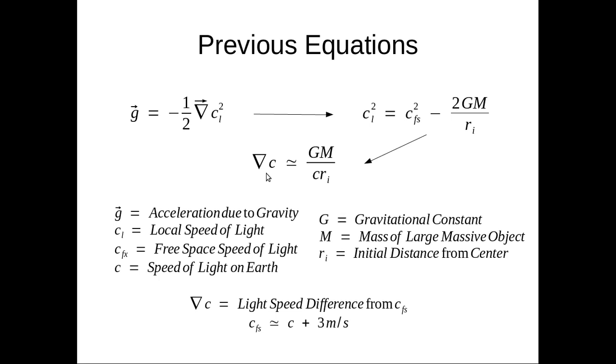And we can come up with an equation, the difference in the speed of light from the free space speed of light is equal to GM over C times RI, the distance from the center of the large mass object.